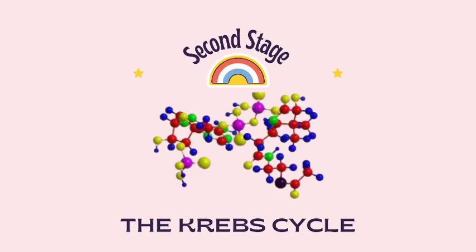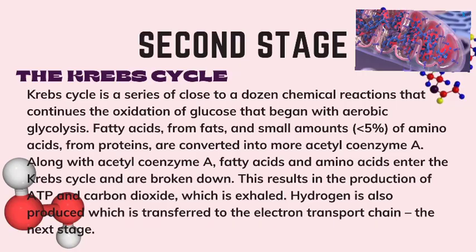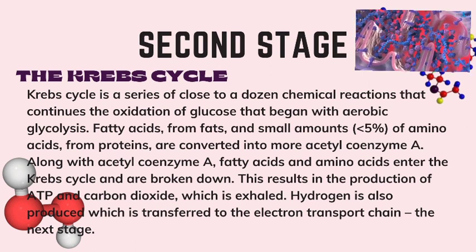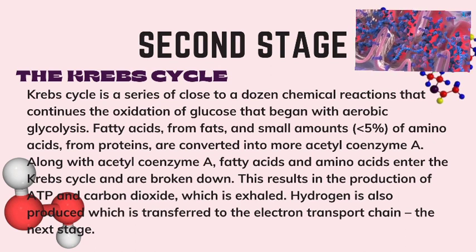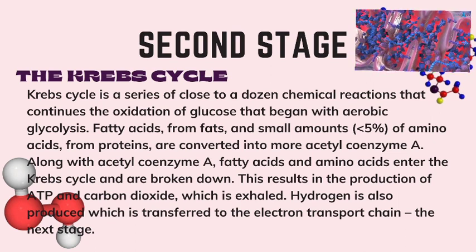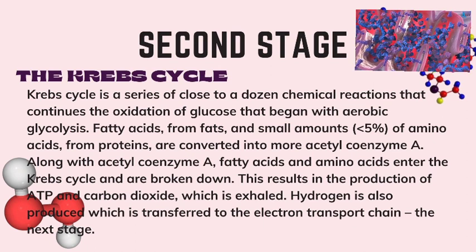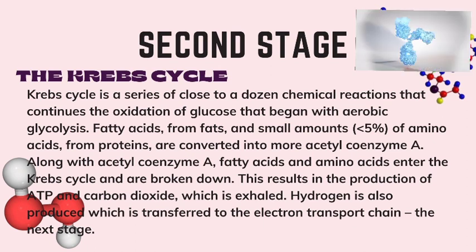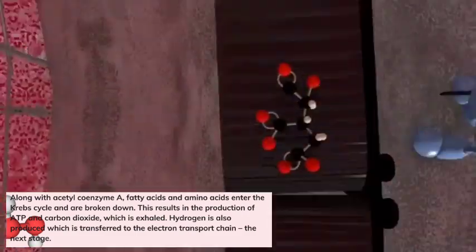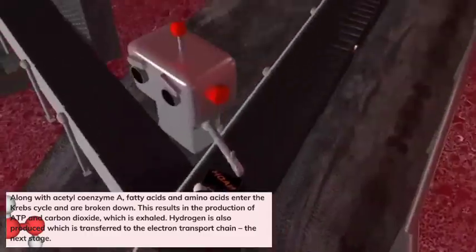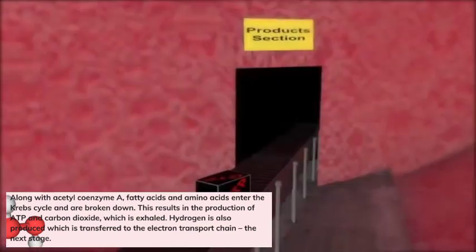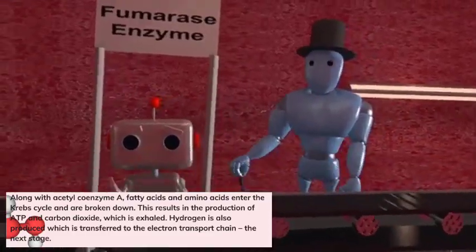The second stage is the Krebs cycle — a series of close to a dozen chemical reactions that continues the oxidation of glucose that began with aerobic glycolysis. Fatty acids from fats and a small amount, less than 5%, of amino acids from proteins are converted into acetyl coenzyme A. Along with acetyl coenzyme A, fatty acids and amino acids enter the Krebs cycle and are broken down. This results in the production of ATP and carbon dioxide, which is exhaled. Hydrogen is also produced, which is transferred to the electron transport chain, the next stage.